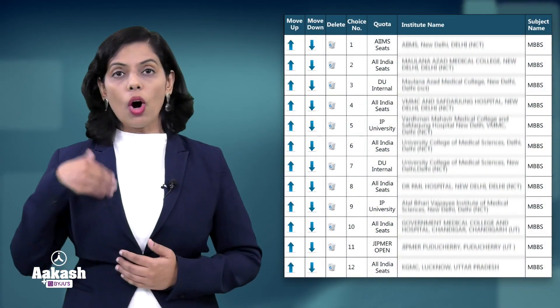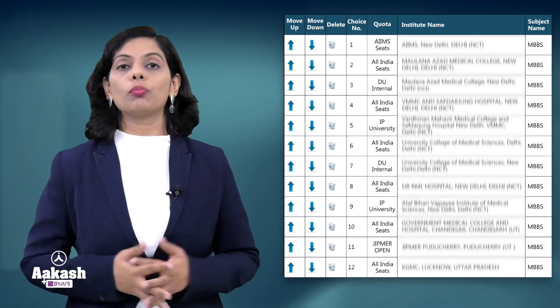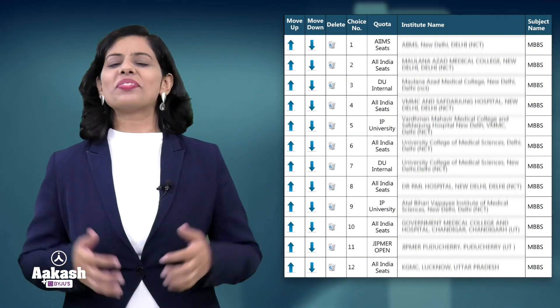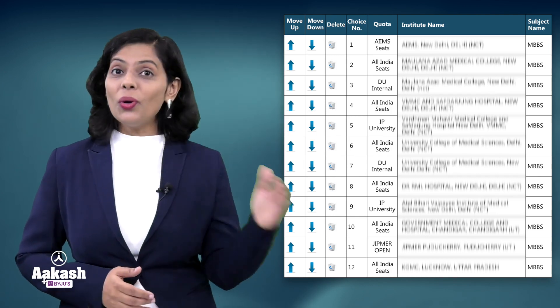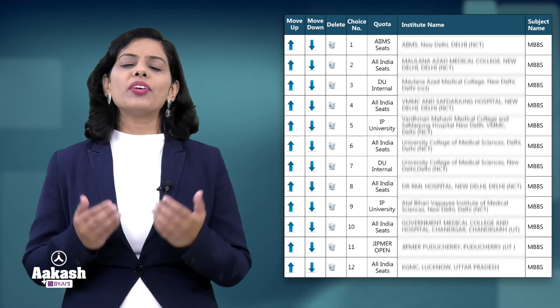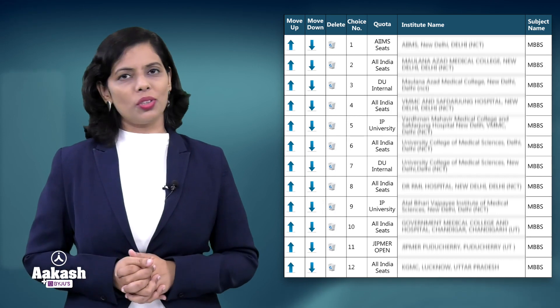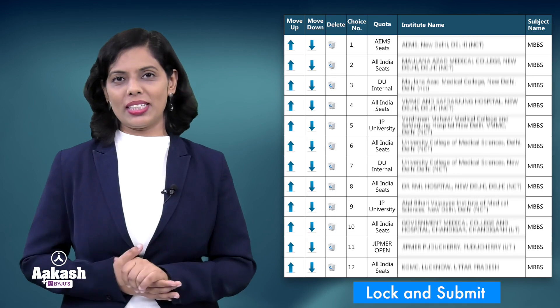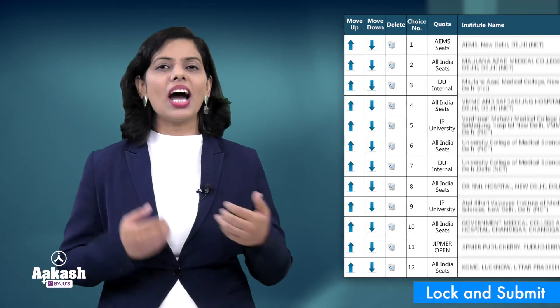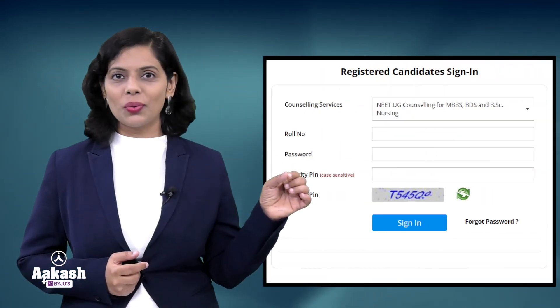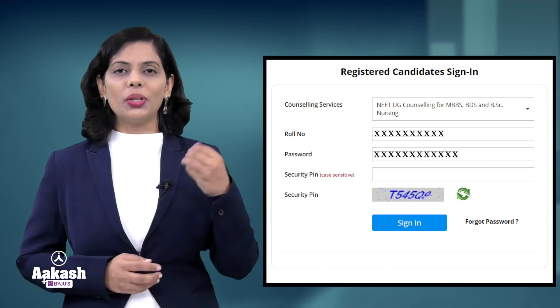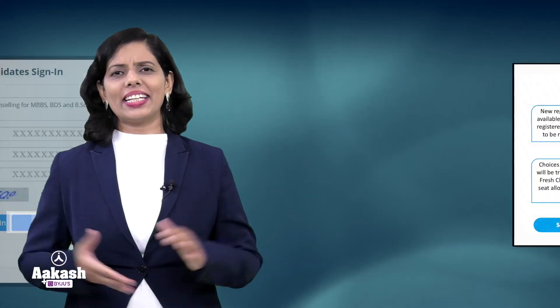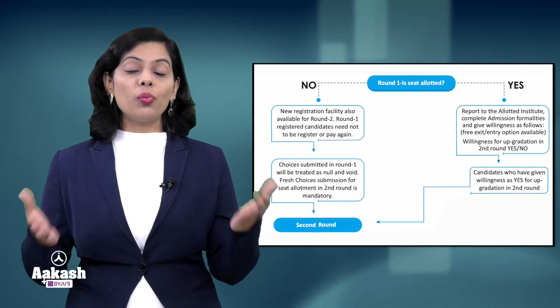After submission, you have to fill the choice of colleges of your interest in top-to-bottom order for Round 1. There is no limitation on filling choices — you can fill the maximum number of colleges of your choice. After filling the choices, it is important to lock and submit them. After three to four days, you will get the Round 1 college allocation list on the MCC website, where you have to log in using your credentials.